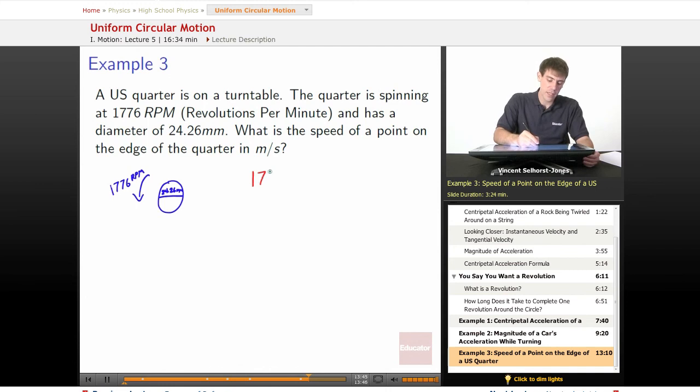Starting off, 1776 revolutions per minute. What would that be if we wanted to get this in seconds? We divide that by 60, and 1776 divided by 60 becomes 29.6 revolutions per second.